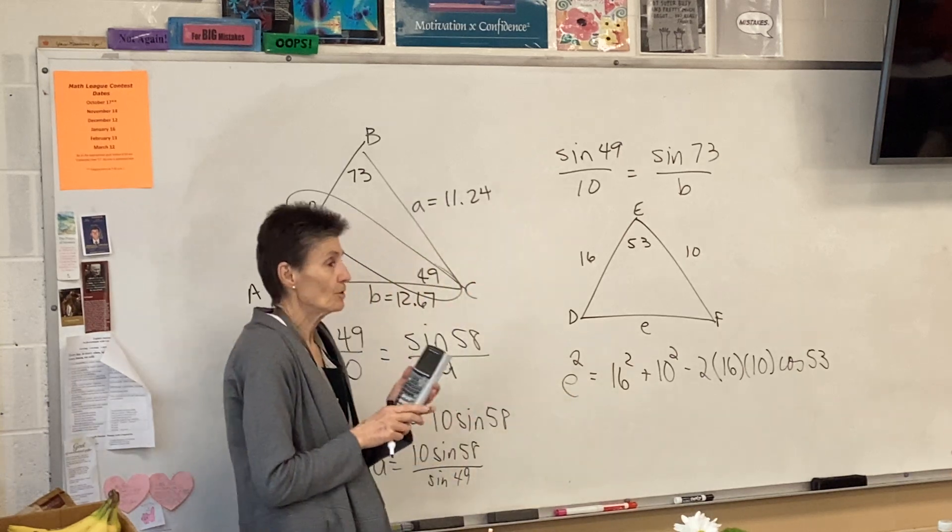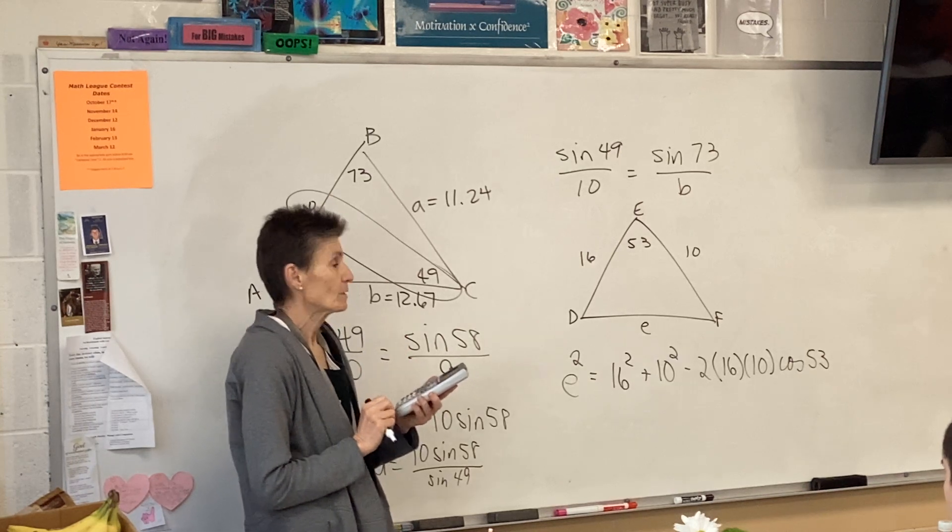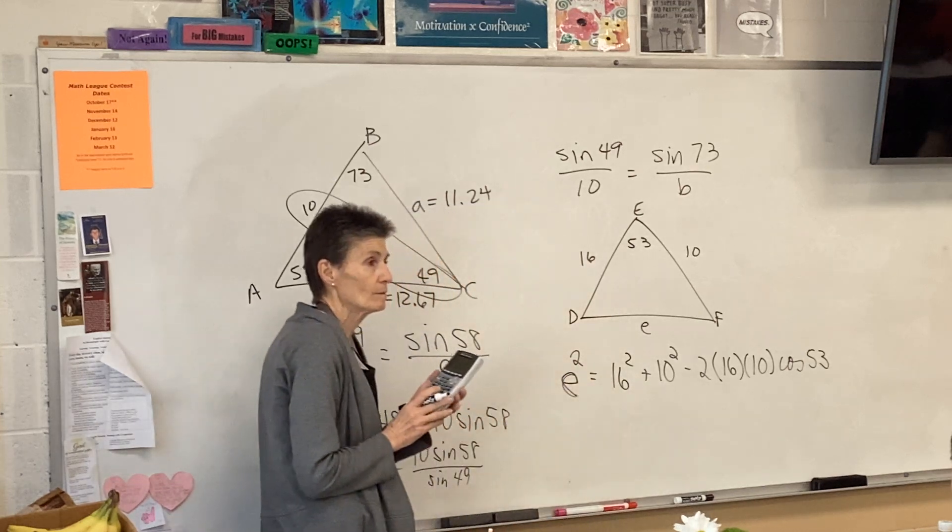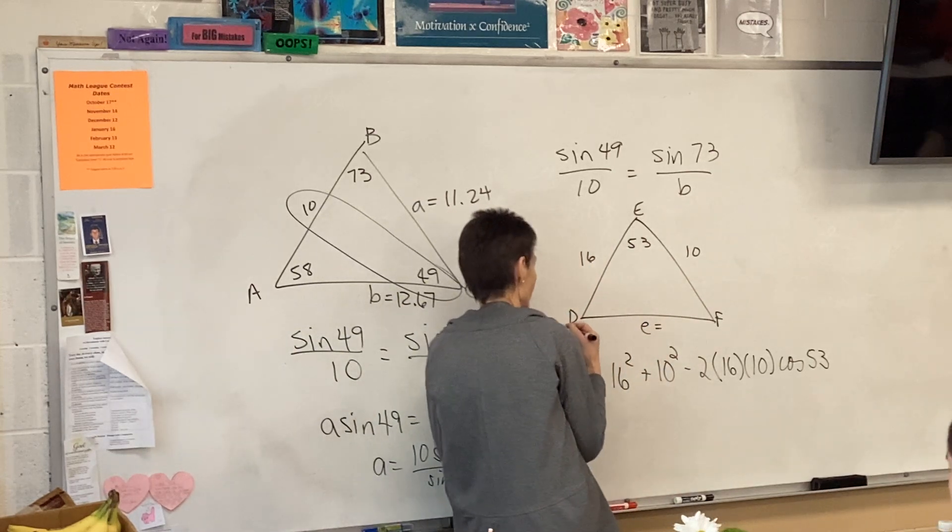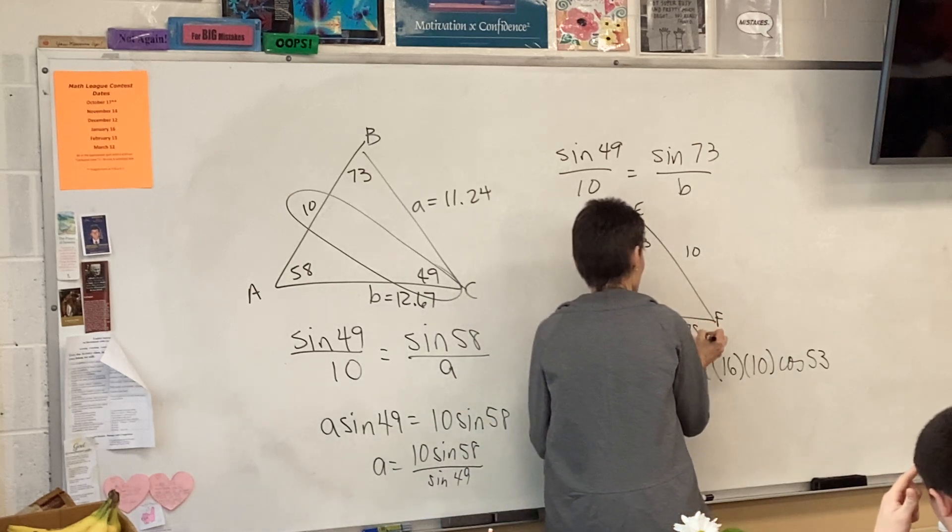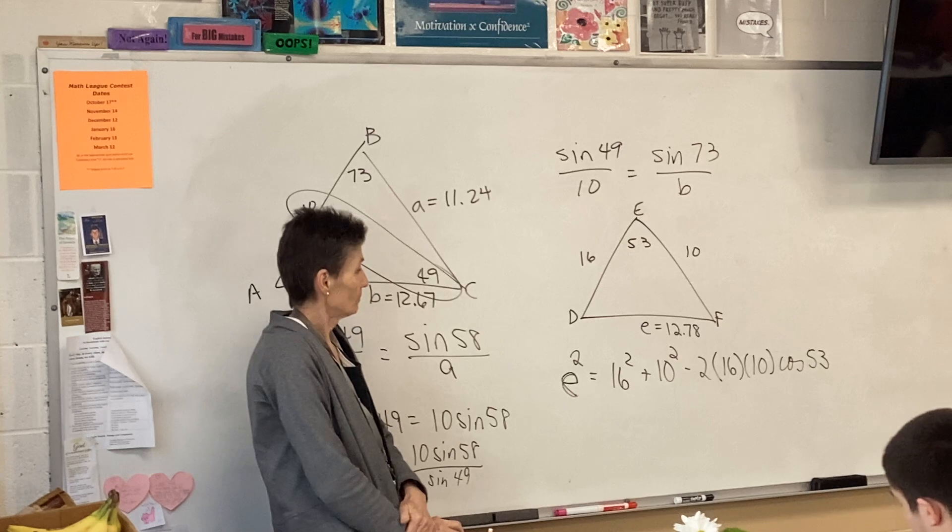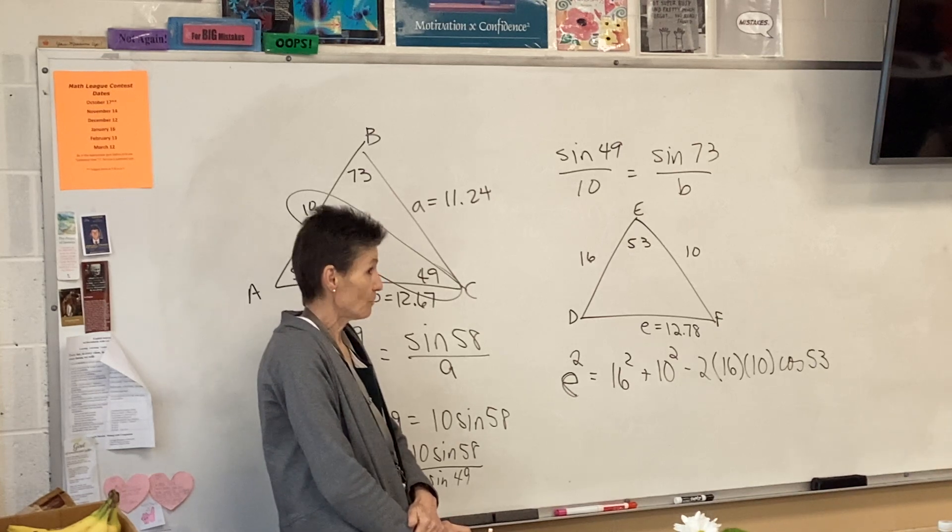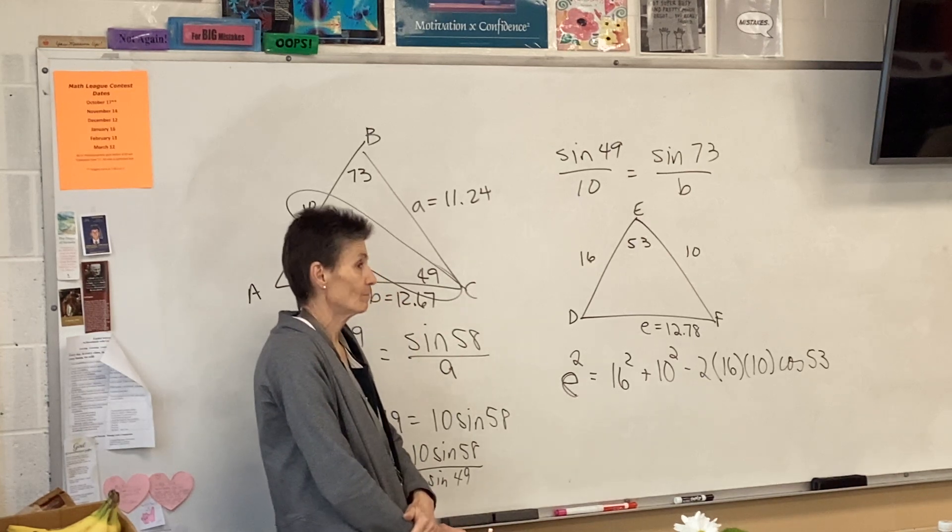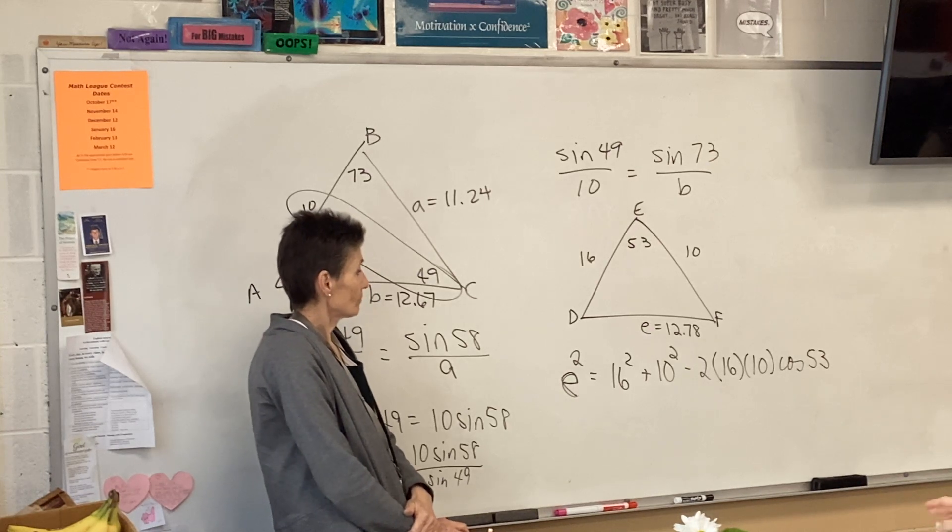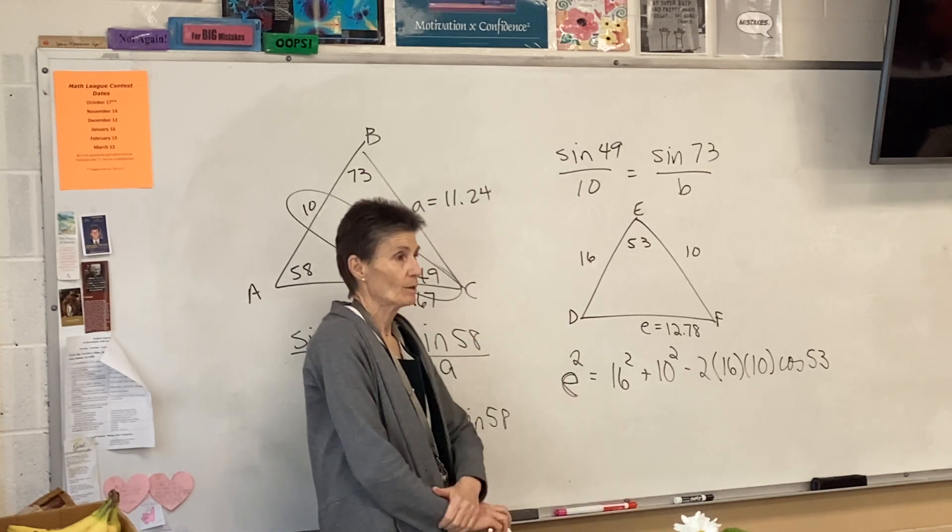So sine 49 over 10 equals this time sine 73 over B. What did you get? 12.6. Yep, 12.6. Okay, that's the test question. All right. Now, we're going to solve another triangle. How do we solve triangles? Either law of sines or law of cosines. Period. Two options. All right. Which one's appropriate here? It'll have to be cosines because we don't have this.